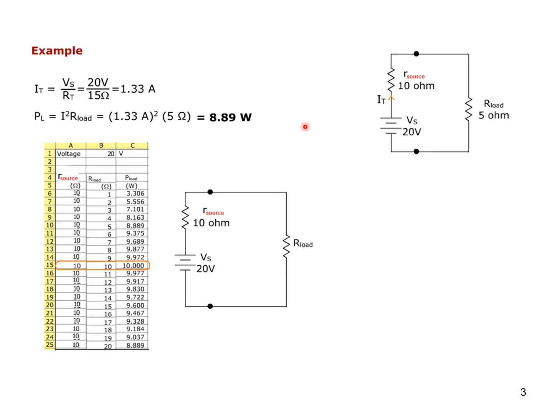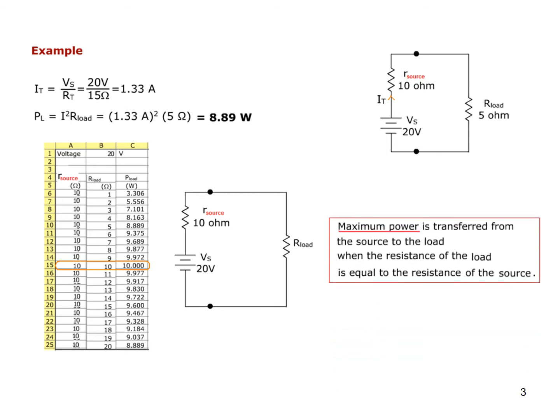From this chart you can conclude that maximum power transfer takes place when R_load is equal to R_source. There is a theoretical explanation in your book — please go through that. This is the primary concept we will focus on in this video.